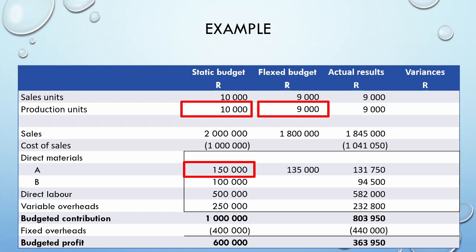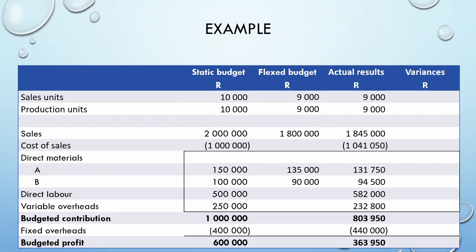Now pause this video and see if you can complete the flexed budget. Direct material B will have a flexed cost of 90,000 rand. Direct labor will be 450,000 rand. Variable overheads will be 225,000 rand, giving us a total cost of sales of 900,000 rand. We can then calculate our flexed contribution also as 900,000 rand. Now we move on to the fixed overheads. Remember, fixed overheads do not vary with production or sales, so they remain constant at 400,000 rand, even though we flexed the budget. We can now calculate our flexed profit at 500,000 rand.